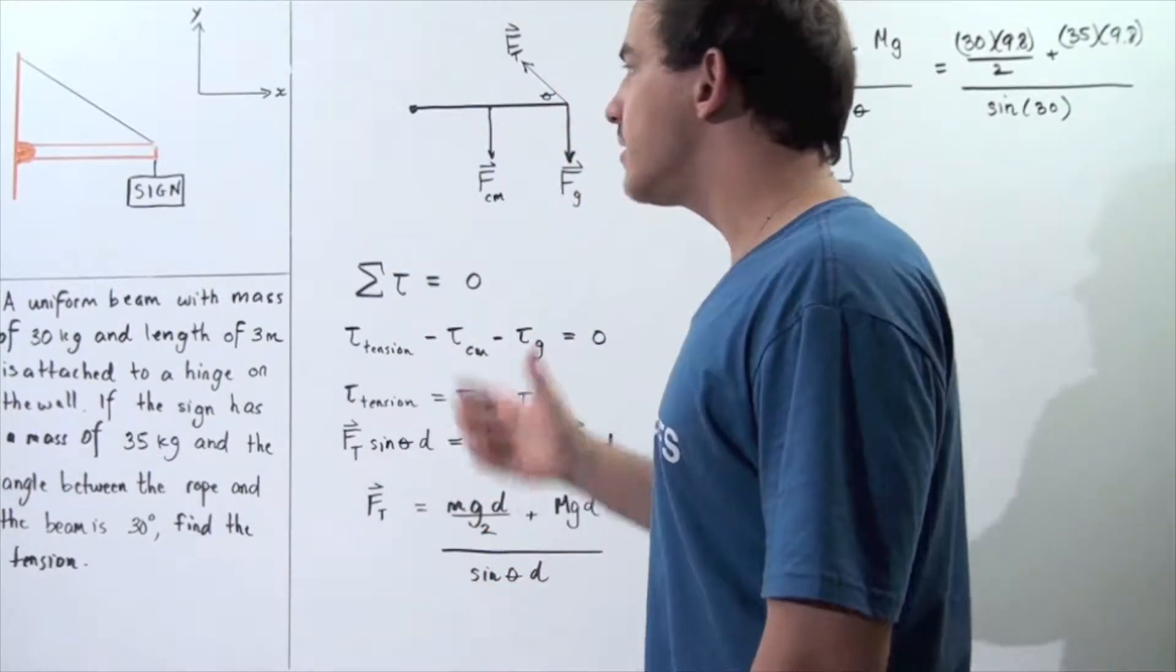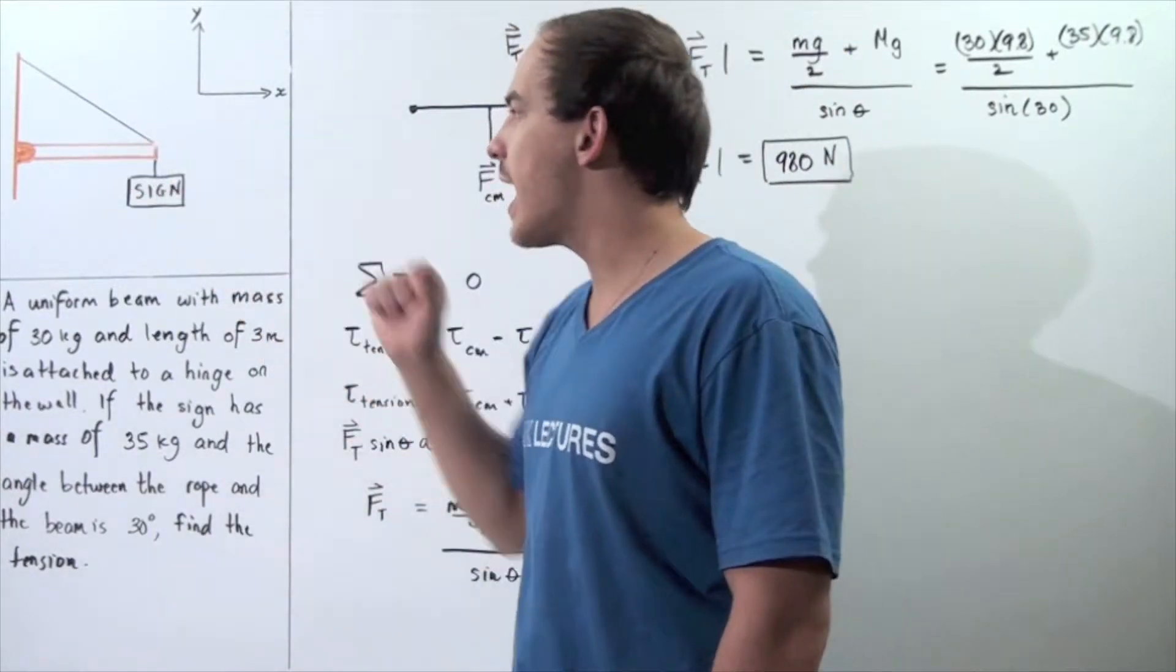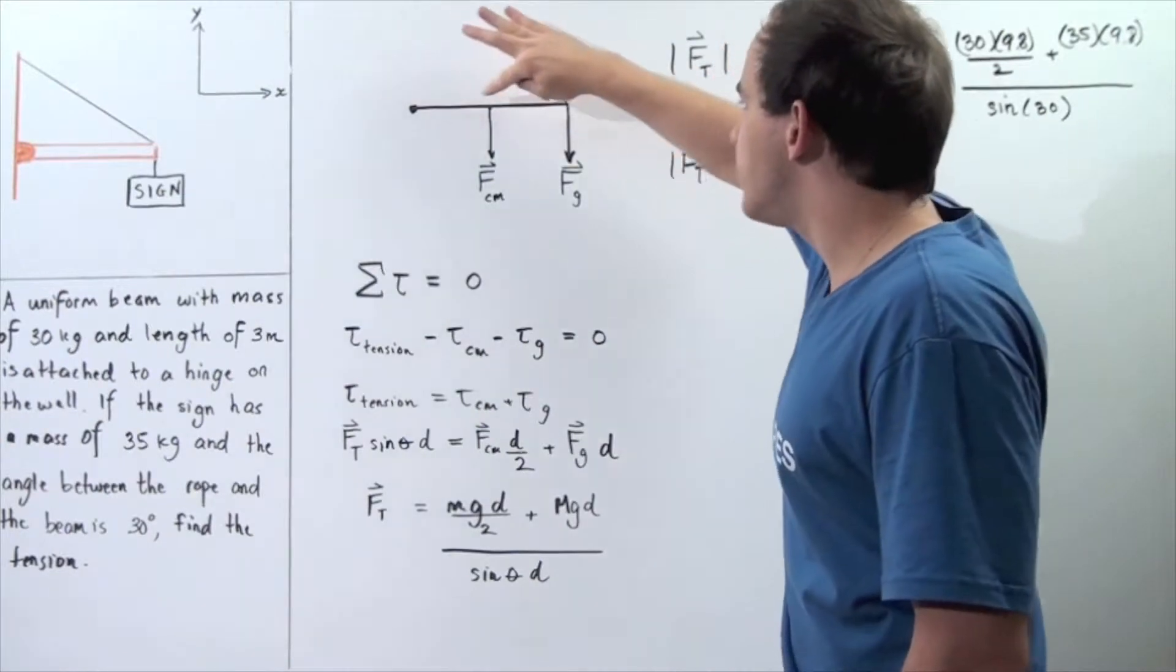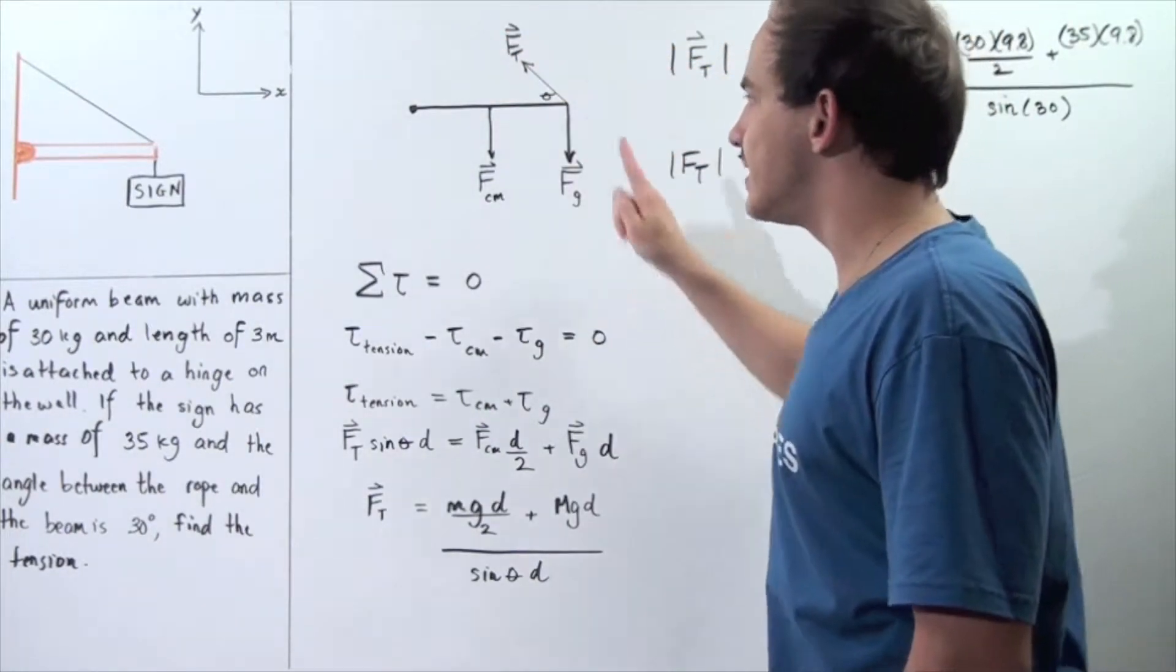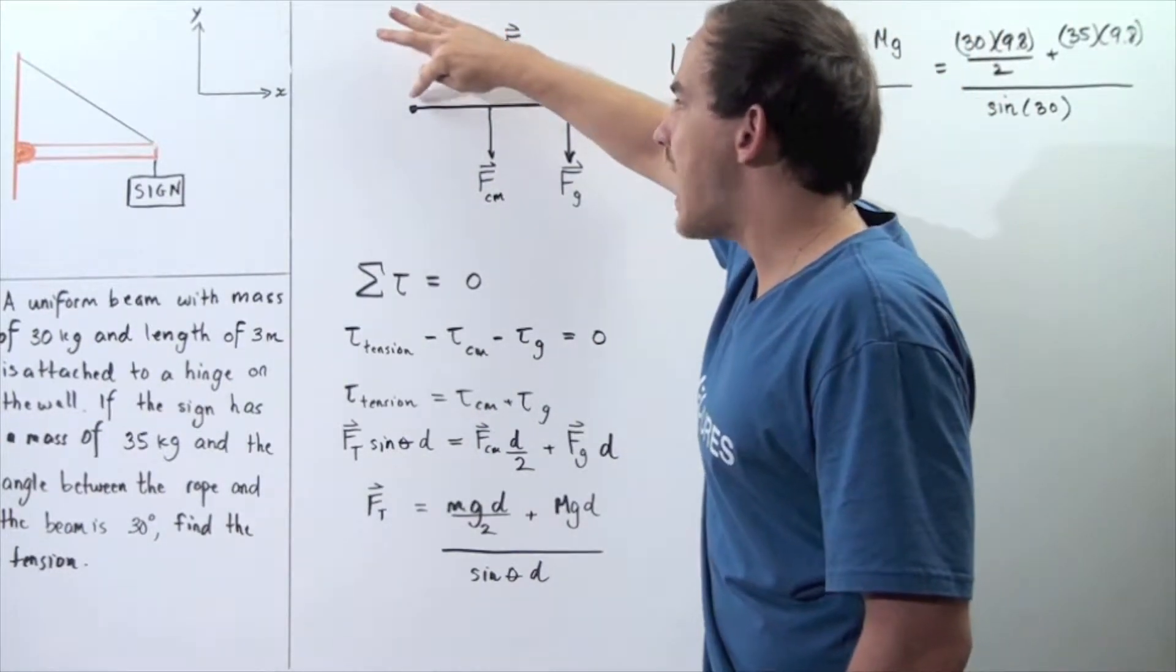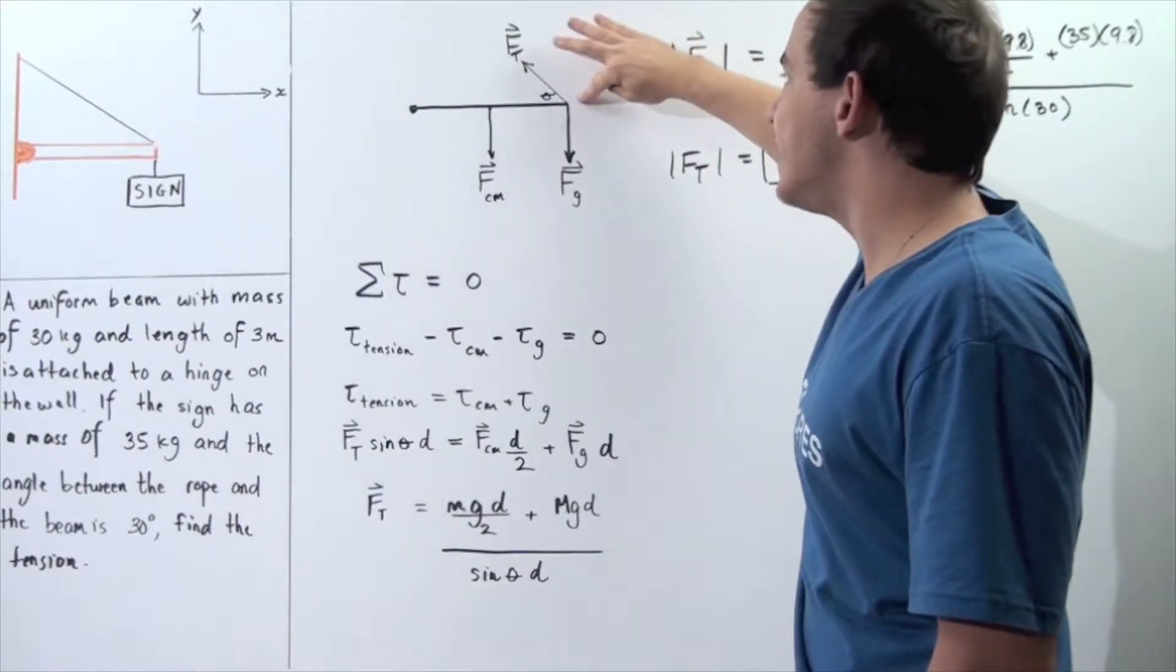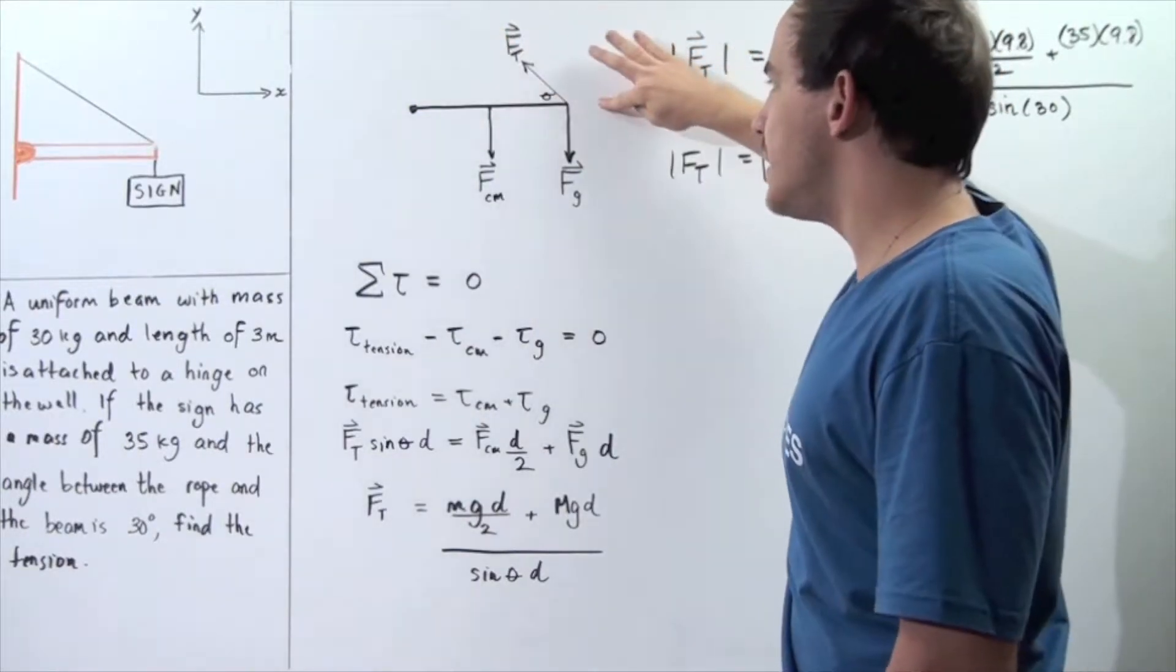Let's begin by drawing the force diagram for our beam. So here we have the following beam. The distance from the hinge, from the axis of rotation to the end of the beam, is 3 meters.